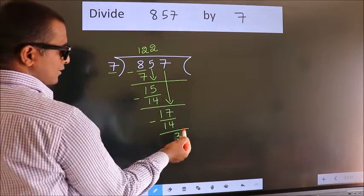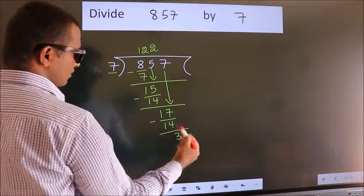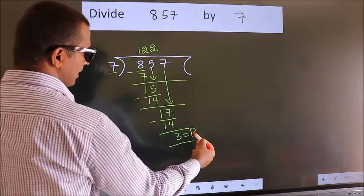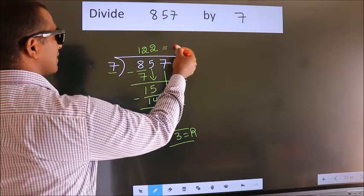No more numbers to bring down. So, we stop here. This is our remainder. This is our quotient.